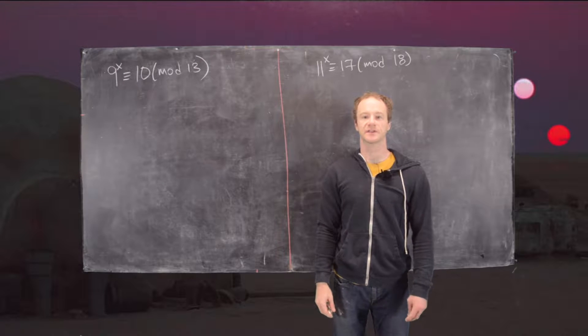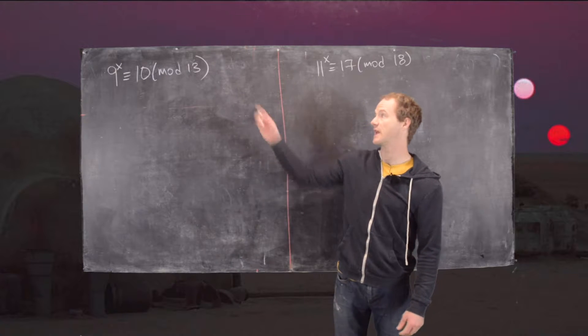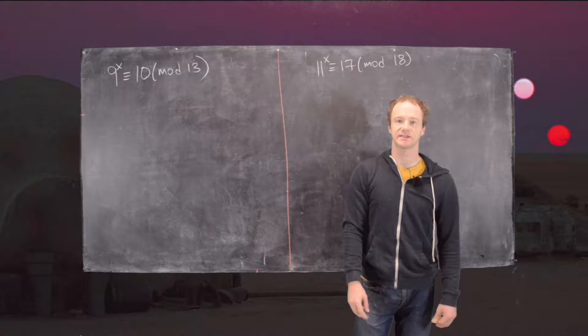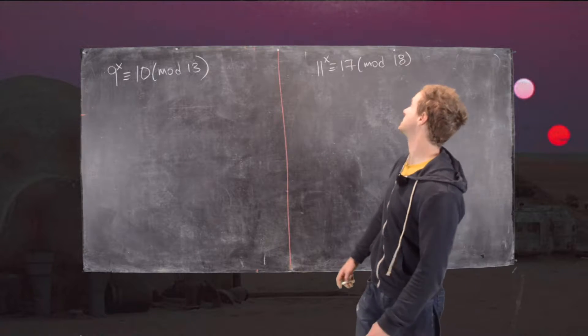In this video we're going to look at the solutions to two exponential congruence equations. We have 9 to the x is congruent to 10 mod 13 and we have 11 to the x is congruent to 17 mod 18.